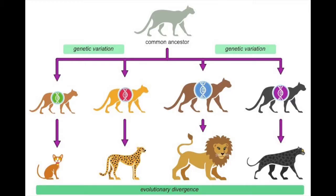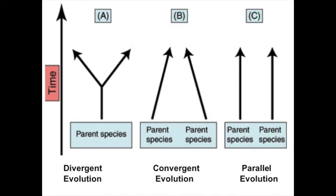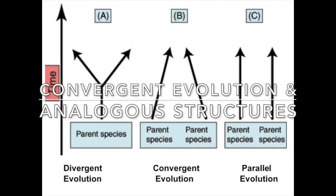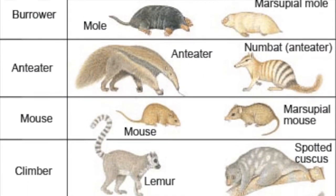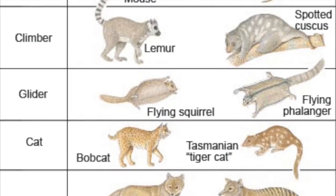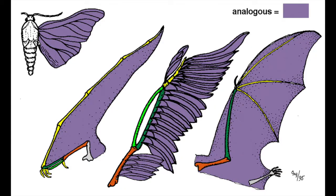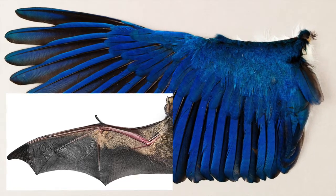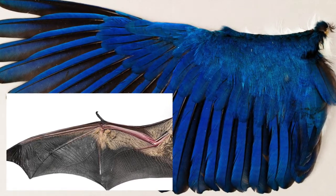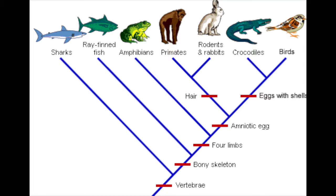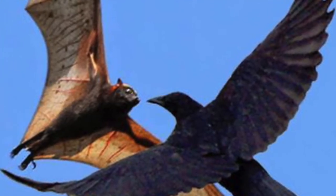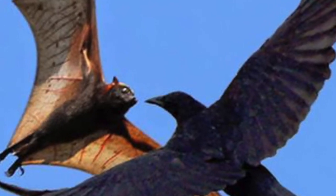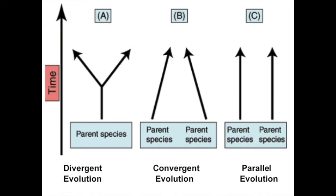Speciation is a lineage-splitting event that produces two or more separate species. When two distinct lineages evolve a similar characteristic independently of one another, it is referred to as convergent evolution. This often occurs because both lineages face similar environmental challenges and selective pressures, producing analogous structures. Analogous structures are dissimilar in anatomy but perform similar functions — for example, bird and bat wings have both been shaped by natural selection for flight. While birds and bats are both chordates, they are still quite unrelated; one is a bird and the other a mammal. The wings were developed from dissimilar origins, meaning wings in each were not inherited from a common ancestor. Analogies are the result of convergent evolution.